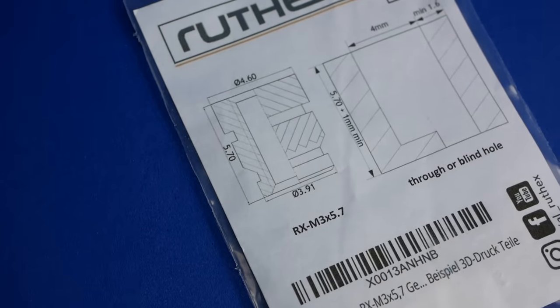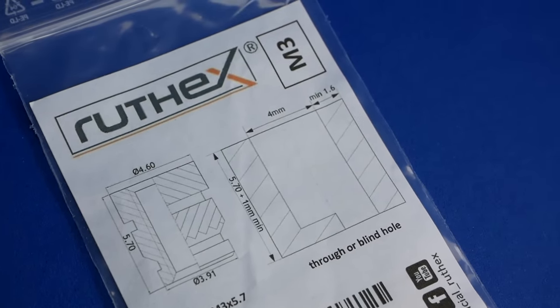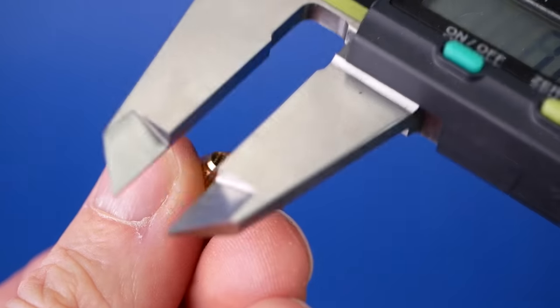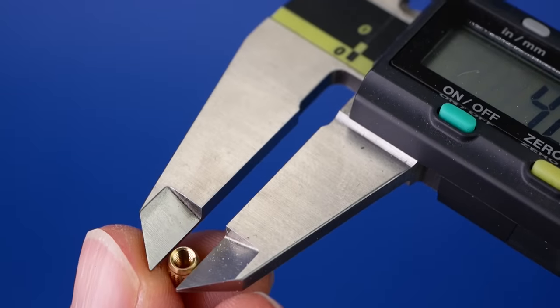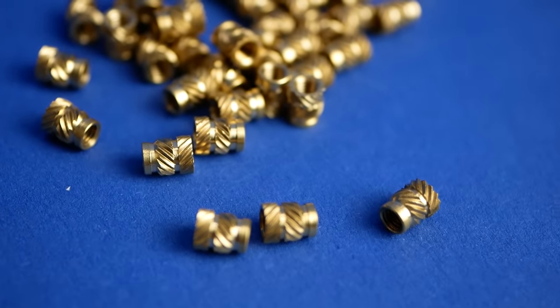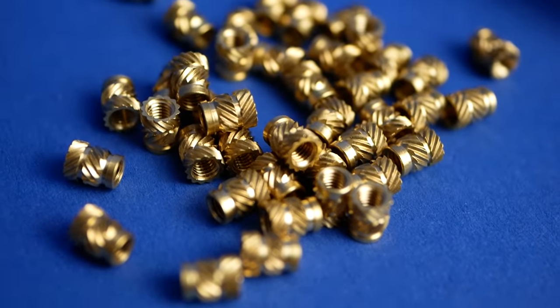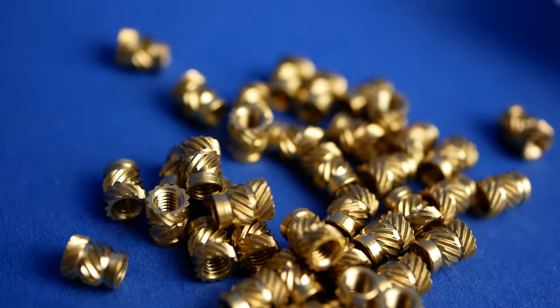The Rutex fortunately come with a manual on the packaging which tells you the size for the hole you need to print. For the other ones I had to make a guess using the external geometry. In the end, I used 4.0mm holes for the Rutex, 4.1mm holes for the eBay inserts and 4.5mm for the injection molding parts.